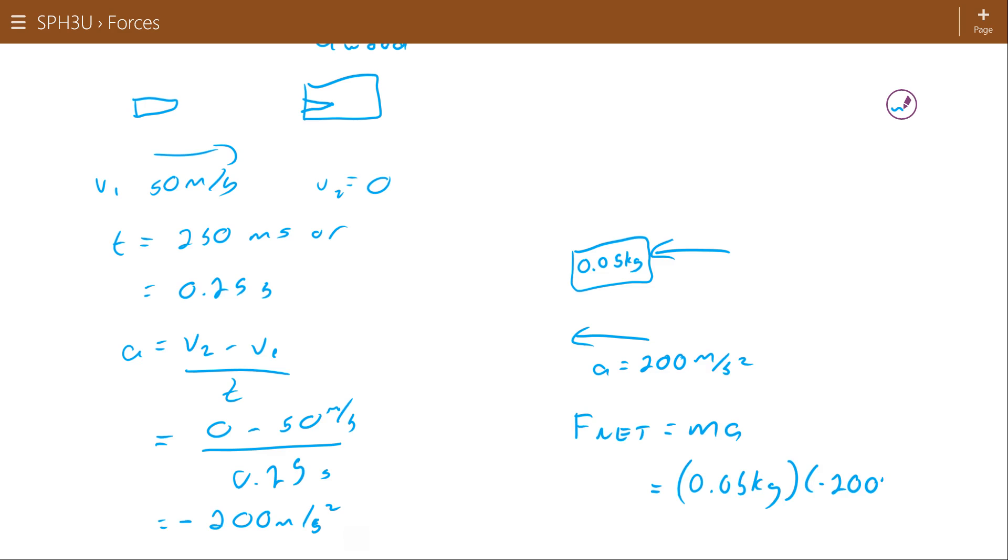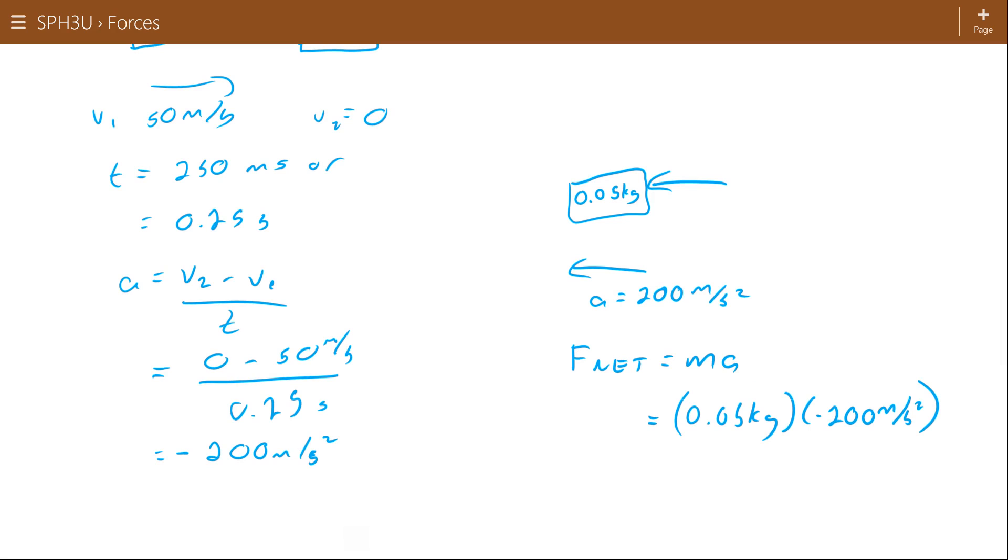Here we're ignoring the gravitational force, even though this bullet's flying through the air. And I think basically the way you should think about this is the gravitational force is going to be small in comparison to the force that's actually going to stop a bullet. So basically we're assuming it's small enough to be ignorable. So here an applied force from the wood is negative 10 newtons.